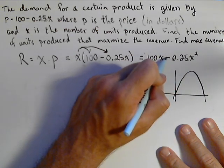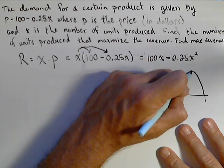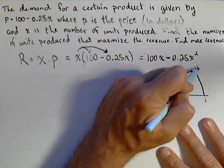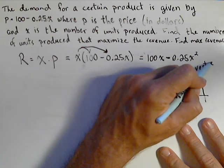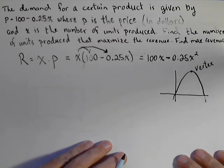I know it's going to open downwards because my a value is negative, so the maximum revenue is going to be right here at the vertex. I have other videos that show how to do a maximum with a graphing calculator. Let's talk about finding a vertex by hand.